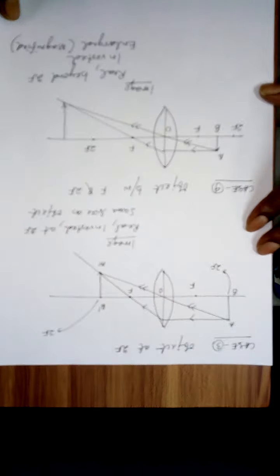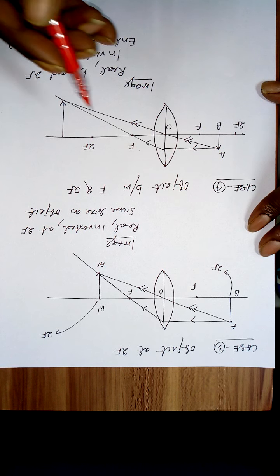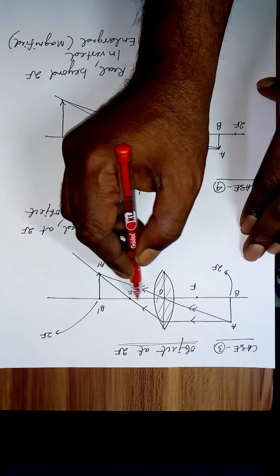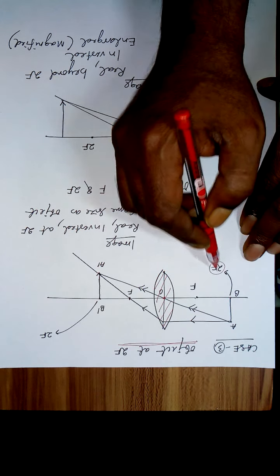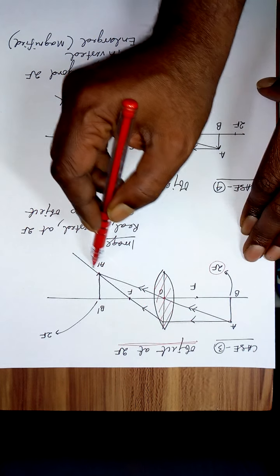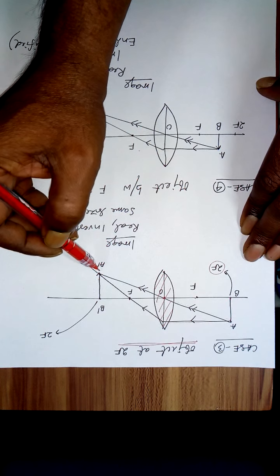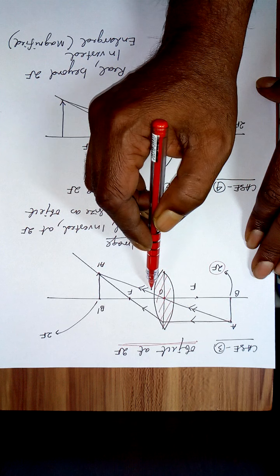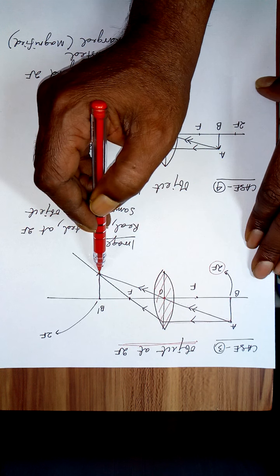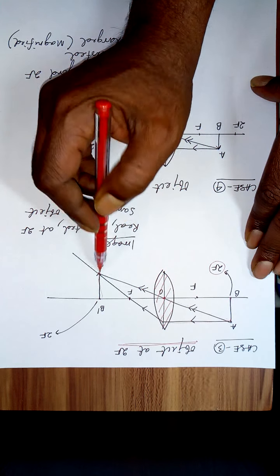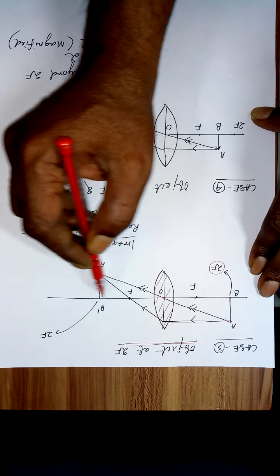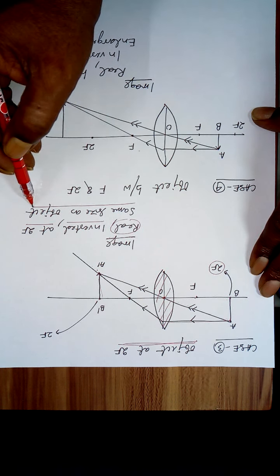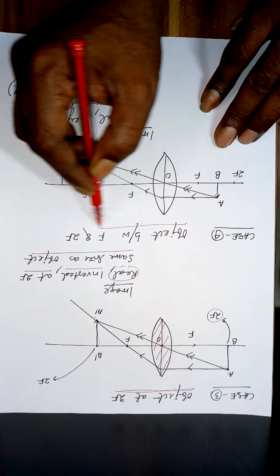Case 3: when the object is at a distance of 2f. A ray parallel to the principal axis passes through the focus; a ray through the optical center goes undeviated. These two refracted rays meet at A', so A'B' is the image of AB. The image is at 2f, it is real, inverted, and the same size as the object.